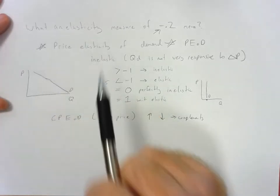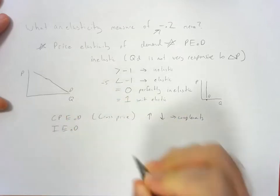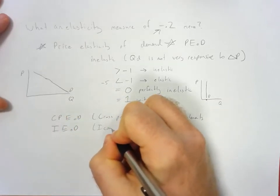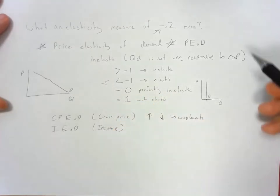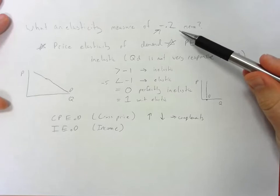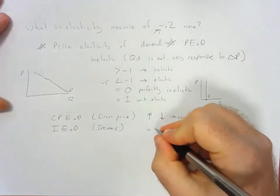What about an elasticity measure that's looking at the income elasticity of demand? Here, we have this negative value, which means that as income goes up, we're actually going to see demand for the product go down, so it's going to be an inferior good.